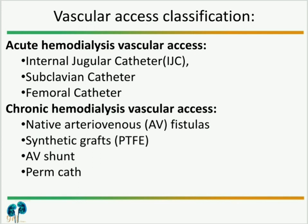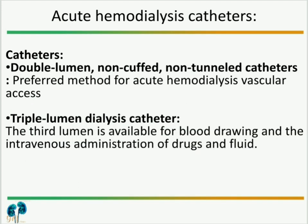For chronic hemodialysis vascular access, we have native arteriovenous fistula, synthetic graft made up of polytetrafluoroethylene, AV shunt, and permanent catheter. The acute hemodialysis catheter is also called a double lumen non-cuffed non-tunneled catheter, because it has two lumens, no Dacron cuff, and does not require skin tunneling for insertion.